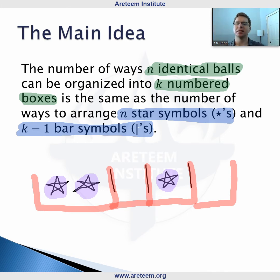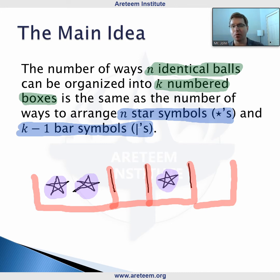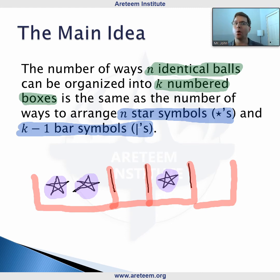So that's where if we have k numbered boxes, this is the same as k minus 1 bar symbols. Really, if you know how to arrange letters, you know how to do the stars and bars idea.